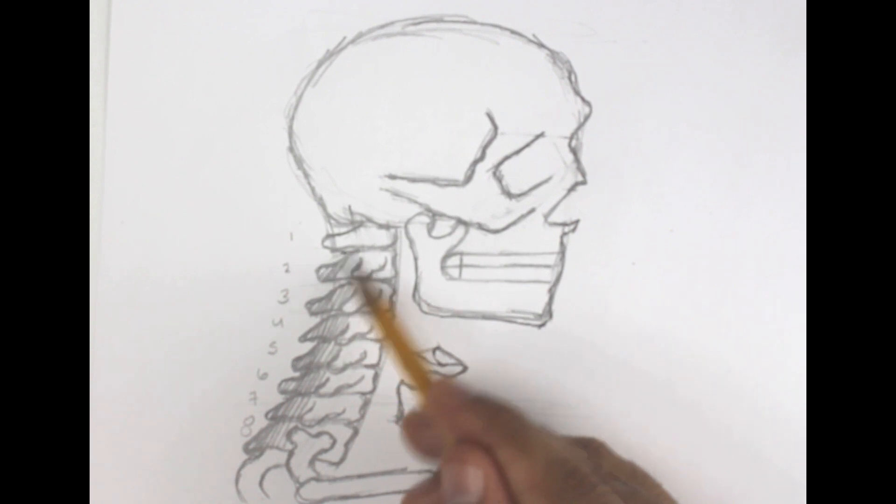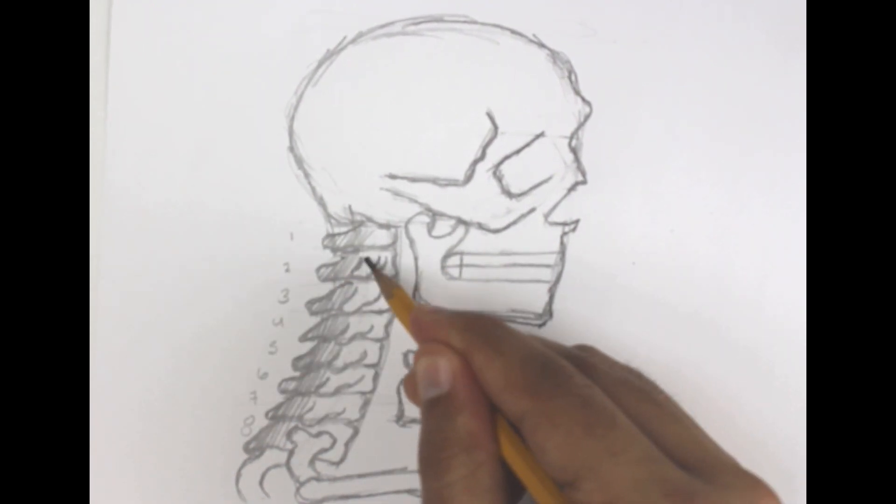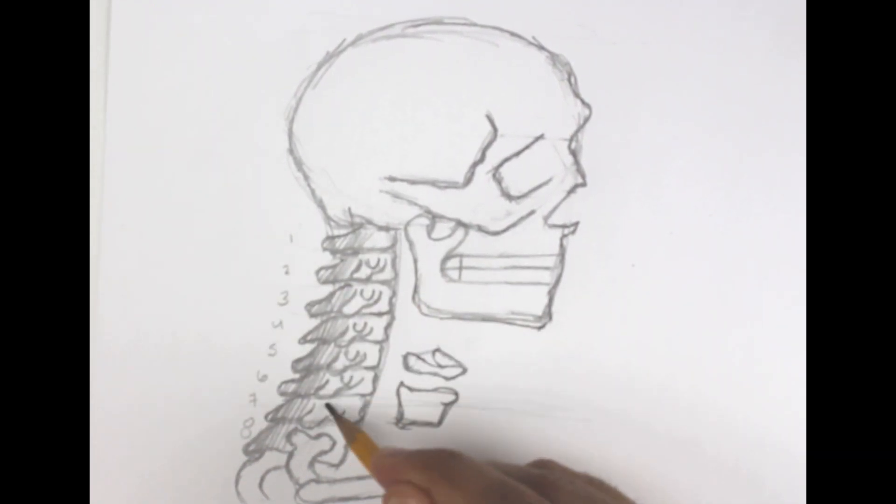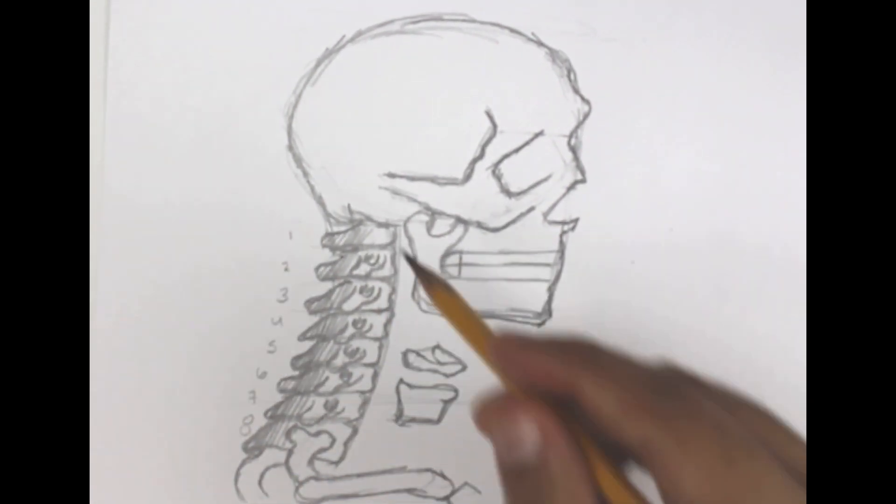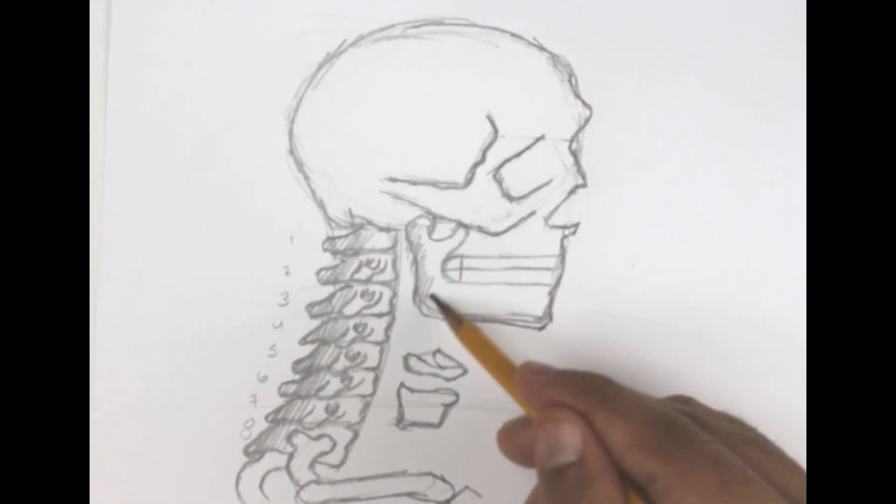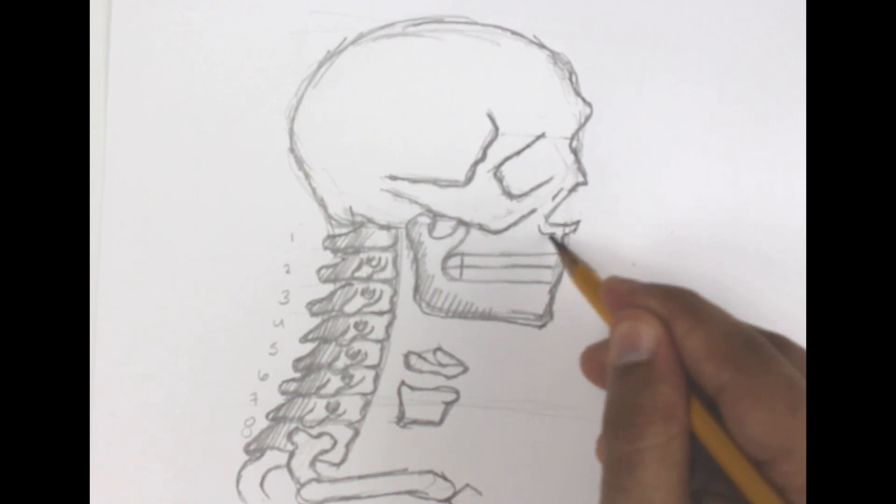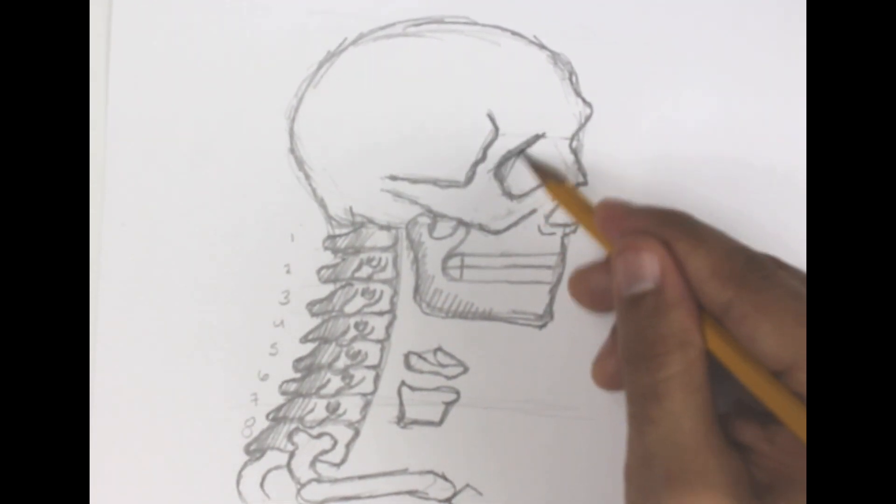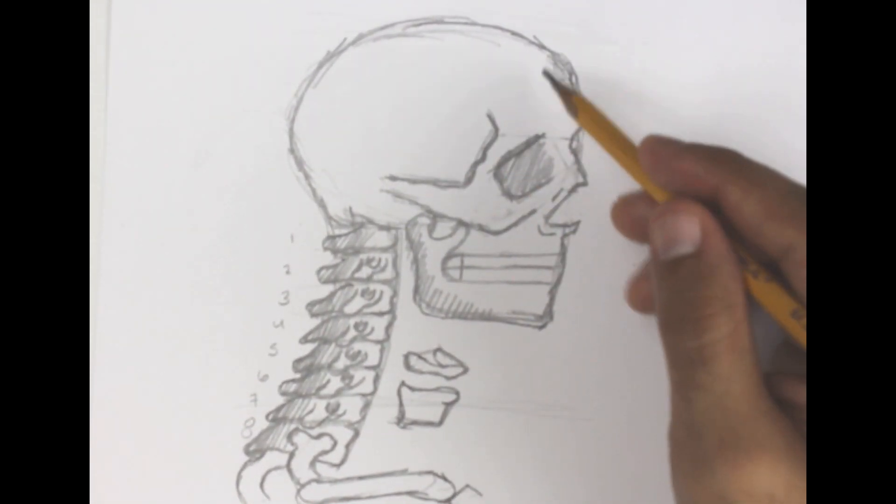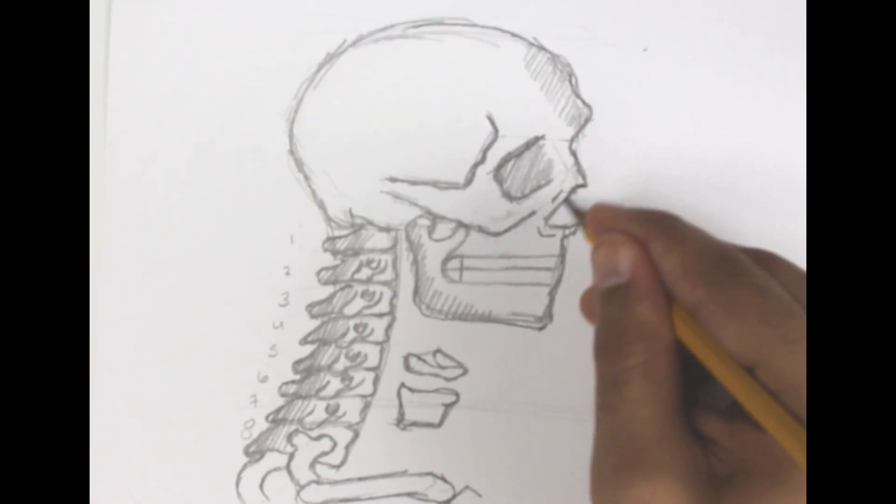The side view is very important because you're not going to always draw people facing you. As a matter of fact, rarely do you draw people in one position all the time. People are constantly moving, so you need to know how to draw people in different positions.